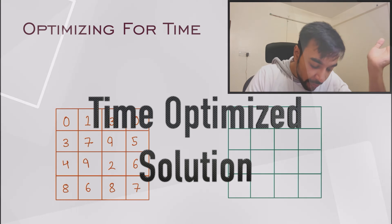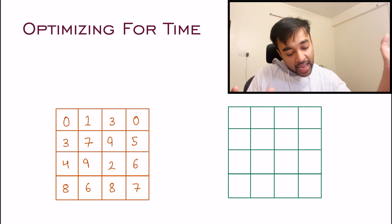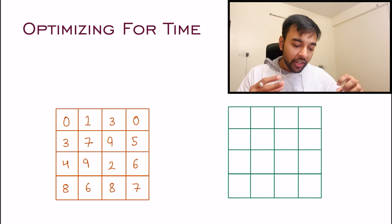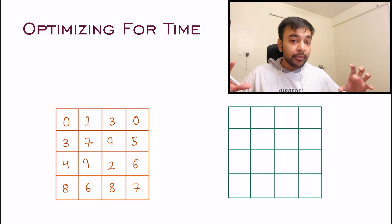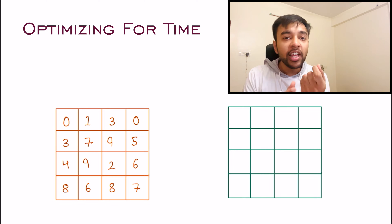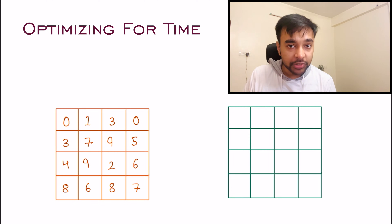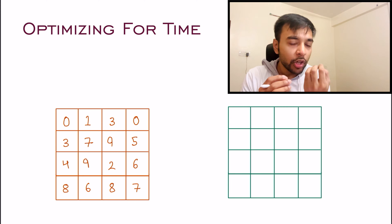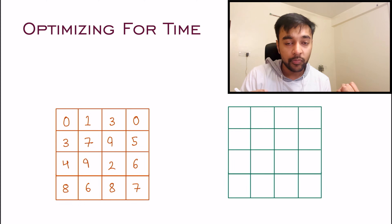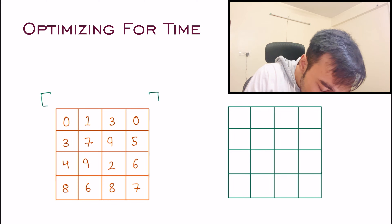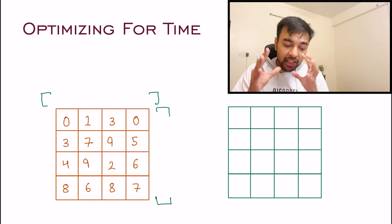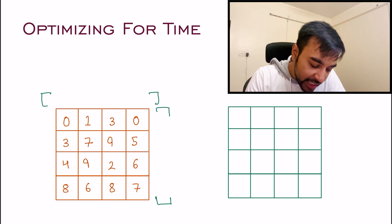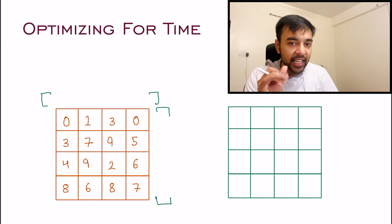To begin our optimization journey, what was taking up the maximum time in the brute force solution? We were traversing through all the rows again and again just to determine if a zero exists, and the same for columns. So instead, take some temporary space just to store that 'this row has a zero' and 'this column has a zero'.